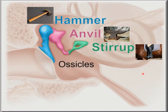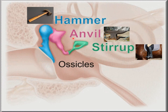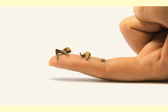A bit more detail on the ossicles — you don't need to know the names, it's just interesting. Back in the day, people thought one looked like a hammer, one looked like an anvil, and one looks like a stirrup. These were common things you might see around, and this gives you an idea of how tiny those bones are — they can sit on somebody's fingertip.